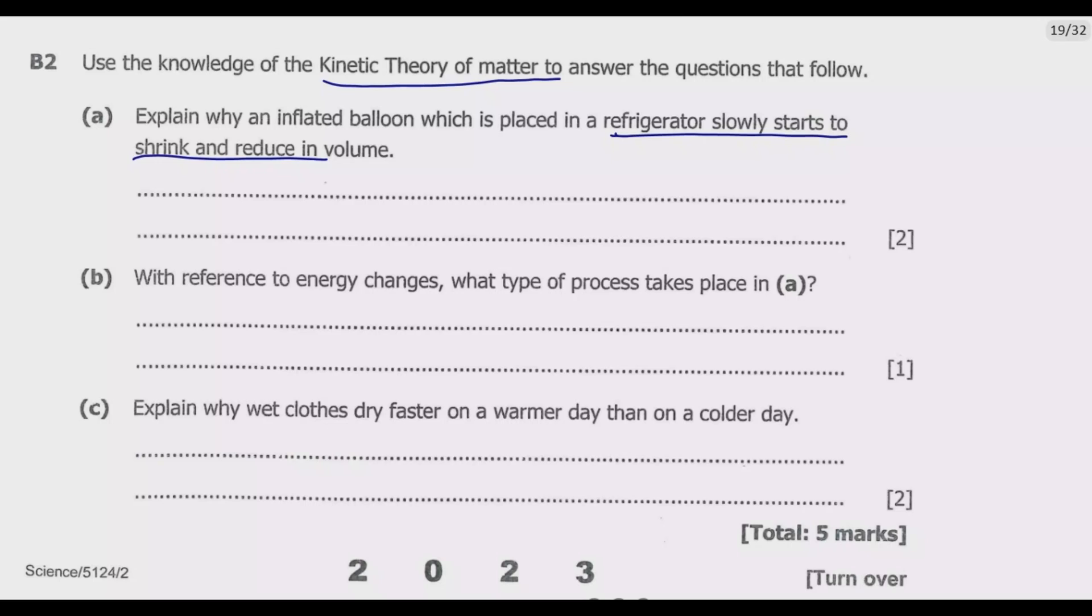So based on that you can tell that when the balloon is placed in the fridge the temperature drops, hence the speed reduces. Because the speed reduces, this will cause the air molecules inside the balloon to move slower and collide less often and with less force, which decreases the pressure inside the balloon. So as a result the balloon shrinks.